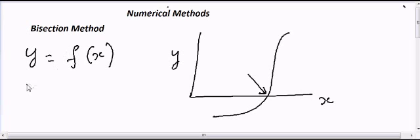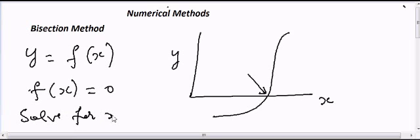Suppose I want to find f(x) = 0 and solve for x. Solving for x means I need to find a value of x at which y equals 0. This is the place where y equals 0 - we need to find this point.